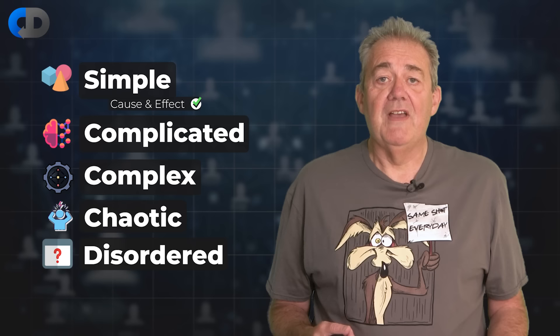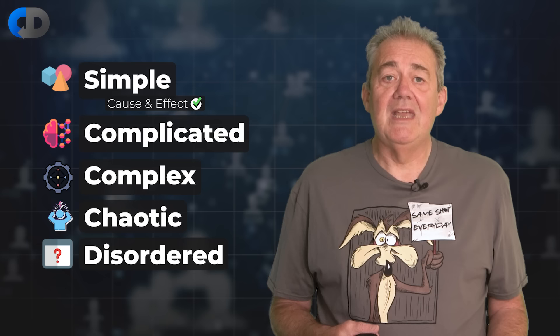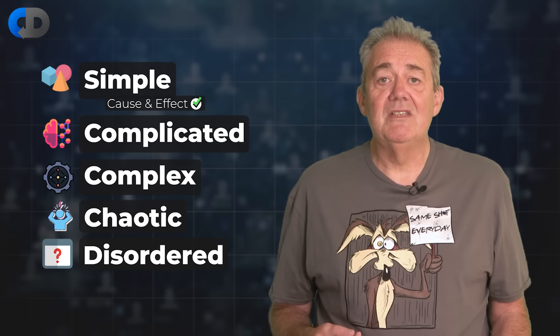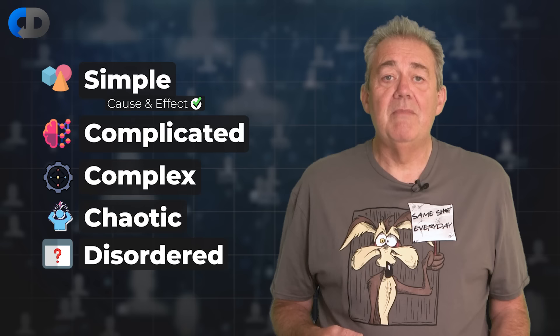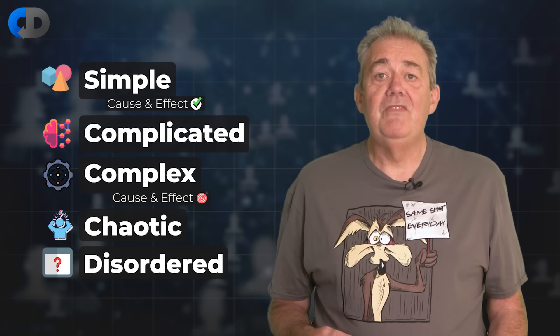Cynefin goes on to divide ordered systems into simple and complicated. For simple systems, cause and effect works and is predictable. The trillion dollar mistake I mentioned at the outset is that most non-technical leaders attempt to squeeze the inherently complex activity of software development into that simple corner of the model, assuming that making it a predictable cause-and-effect kind of activity is their goal.